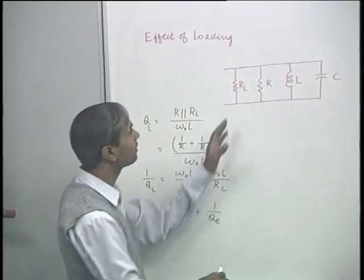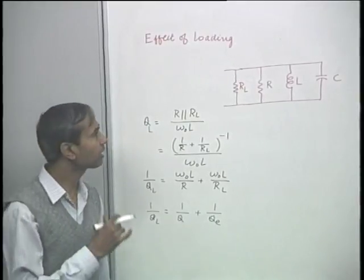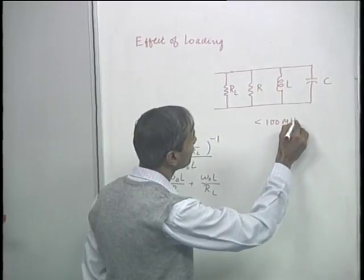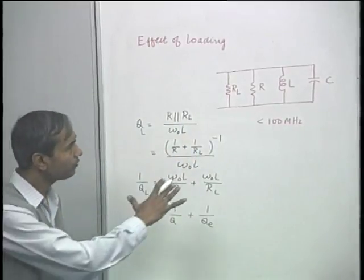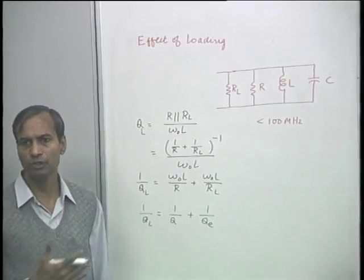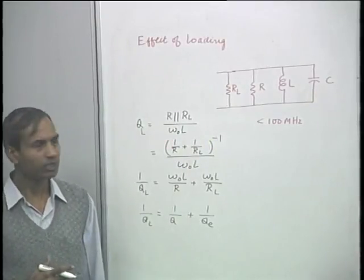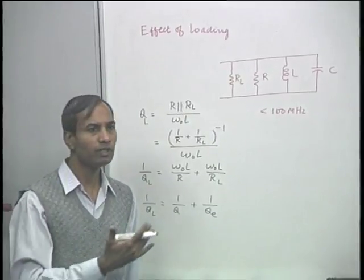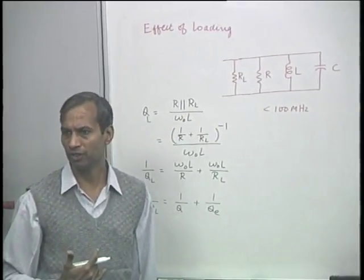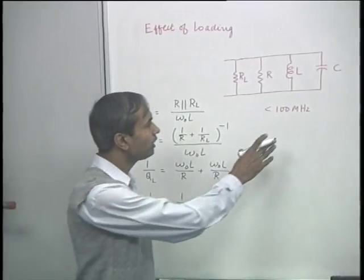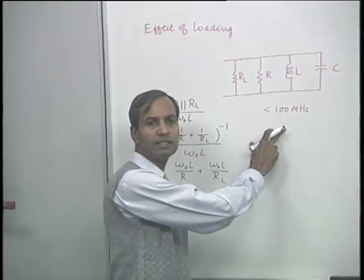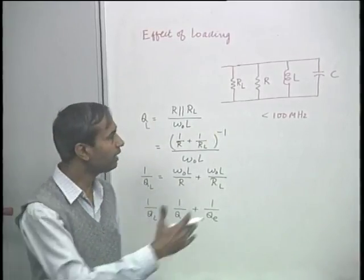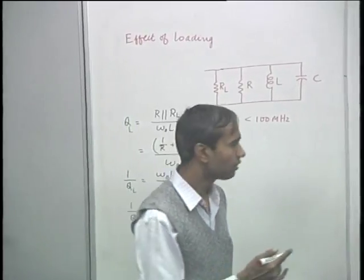While resonators based on lumped elements can be utilized up to frequencies of around 100 MHz, as the frequency of operation increases beyond this, problems arise in using this form of resonant circuit. For example, parasitic reactances make it difficult to correctly estimate the behavior, and losses also increase. Therefore, as we try to have resonators at higher frequencies, we must change the configuration — and this is where we can use transmission line resonators.